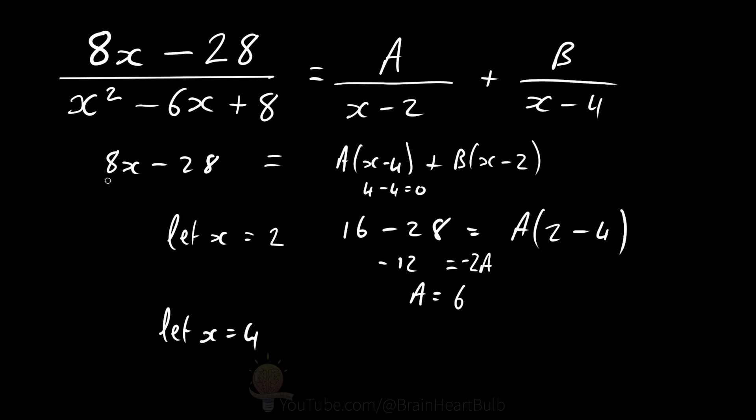which means 4 times 8 is 32 minus 28, which equals 4, equals B multiplied by 4 minus 2. And this equals 4, which equals 2B. And therefore, B is equal to 2.